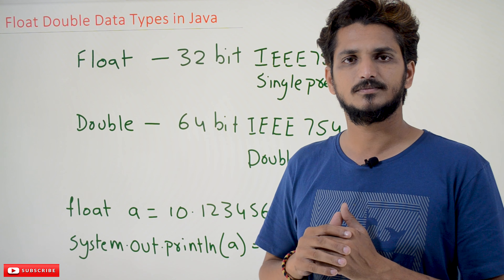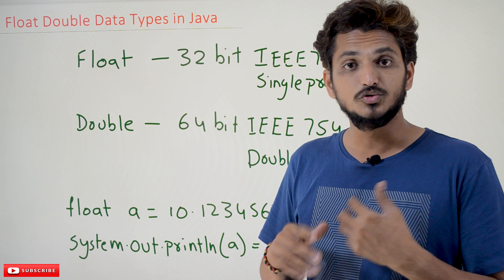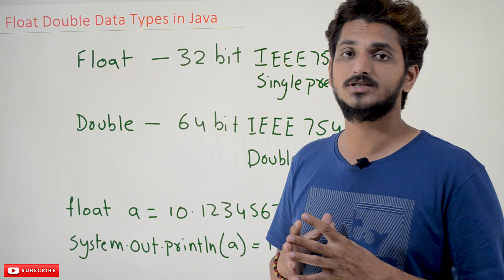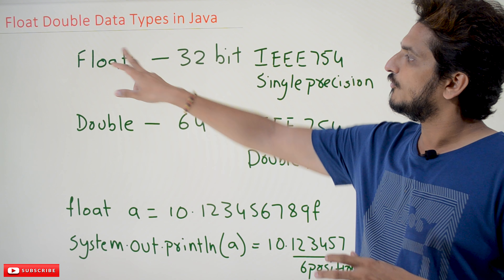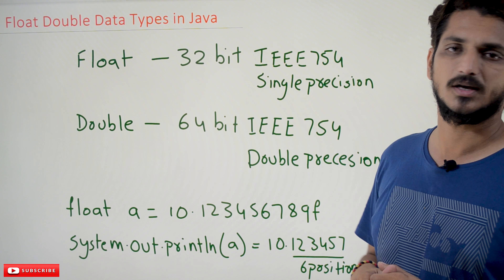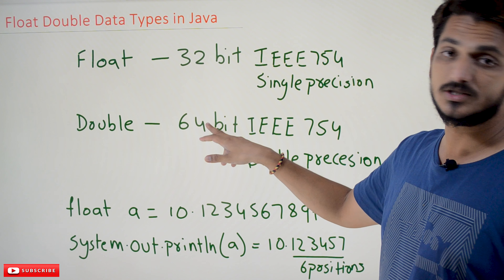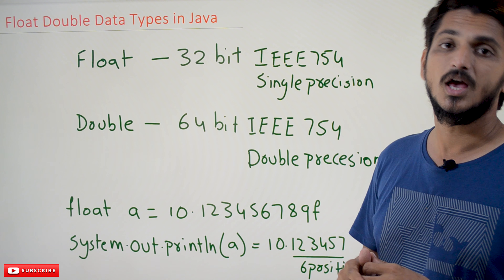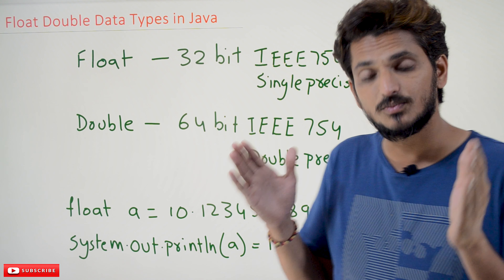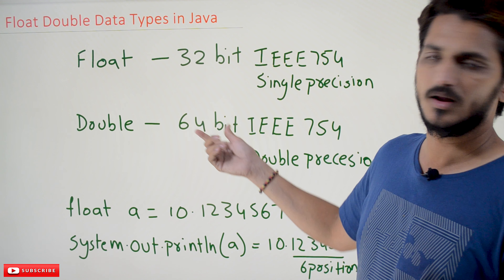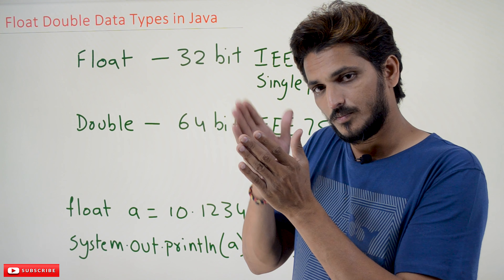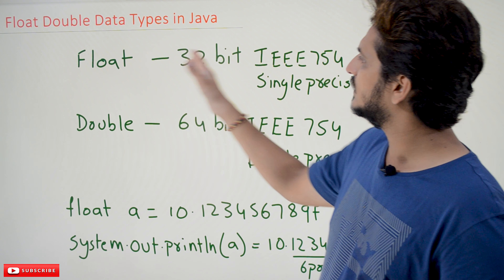Either one of these data types is used to store floating point numbers. Now you have to understand the difference between them. Float is going to take 32 bits, meaning 4 bytes of memory space. Double is going to take 64 bits, meaning 8 bytes of data space. If you want to store large size decimal values, we have to go with double. For small size decimal numbers, we go with float.